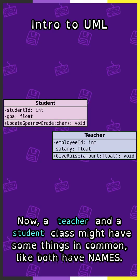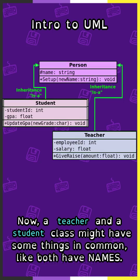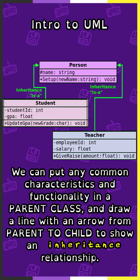A teacher and a student might have some things in common, like both have names. We can put any common characteristics and functionality in a parent class and draw a line with an arrow from the parent to child to show an inheritance relationship.